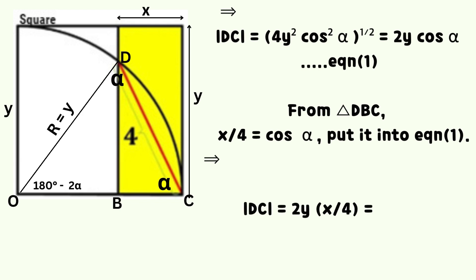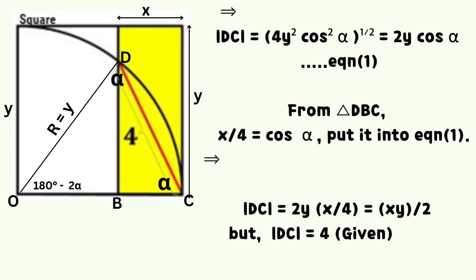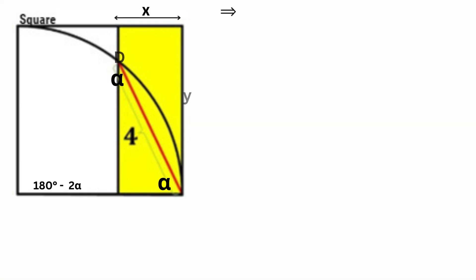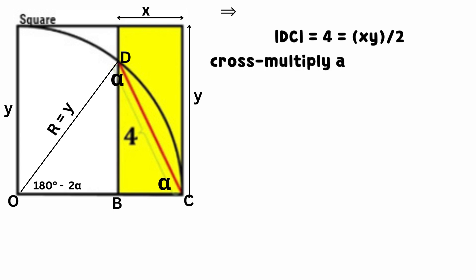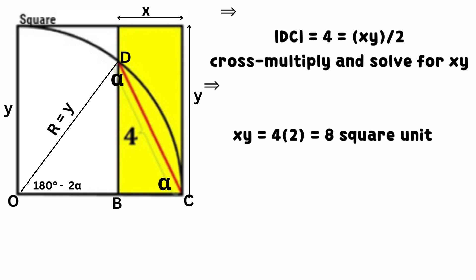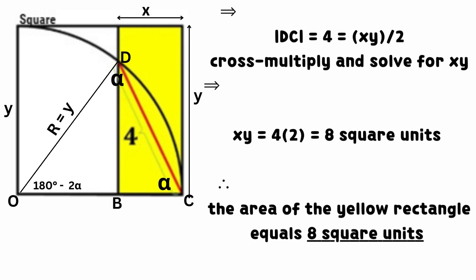It implies that the length of line DC equals the product of X and Y divided by 2. But line DC equals 4 units — it is given. Therefore, XY divided by 2 equals 4. Cross multiplying, the product of X and Y equals 8 square units. Therefore, the area of the yellow rectangle equals 8 square units.